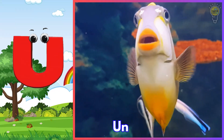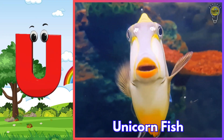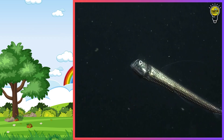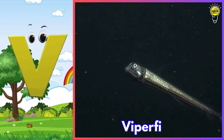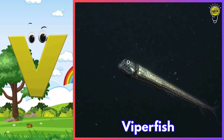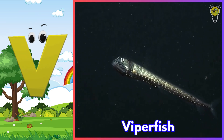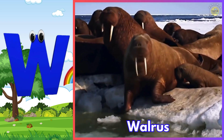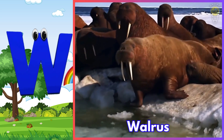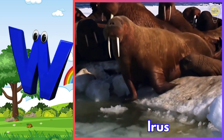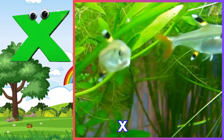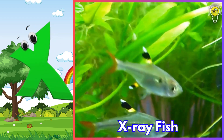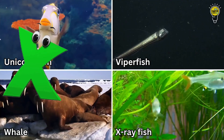U is for unicorn fish. V is for viperfish. W is for walrus. X is for x-ray fish.